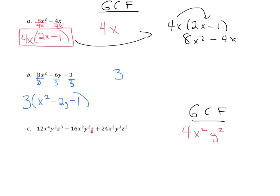Finally, we have z to the 3rd, z, and z squared. We take out a z from each of these — we can't go any bigger because we have to take it out of all three, and we can't take a z squared out of the middle term. So our full GCF is 4x squared y squared z. We write that out front, open our parentheses, and divide each of the three terms by 4x squared y squared z.